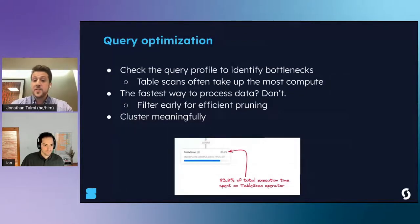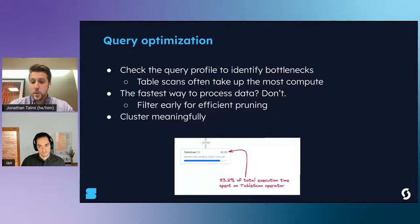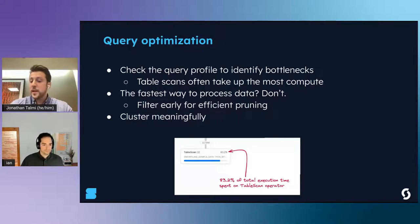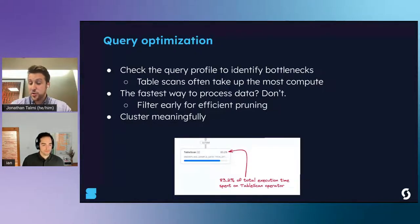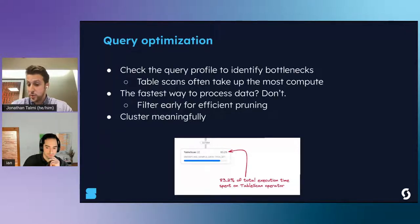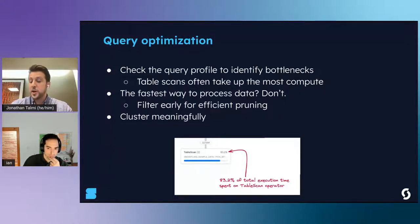Beyond configuring and sizing warehouses, optimizing queries themselves can also have big effects on overall costs. If you have a long-running query or dbt model, the first thing to check is the query profile to identify bottlenecks. What you might see is table scan operators taking up the most time. This leads to the first and most important lesson for query optimization on Snowflake: the fastest way to process data is to not do it. Filter early for efficient pruning of underlying micro-partitions. You'll also want to cluster your data meaningfully so that queries run on these tables run a lot faster.